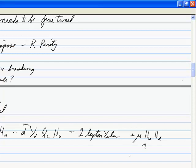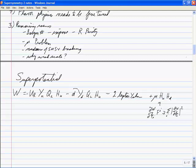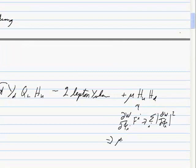When I take the superpotential and take dW/dφ times F, then integrate out F using the sum over i of |dW/dφᵢ|², the μ term gives: taking the derivative with respect to H_D I get μ²H_D², and with respect to H_U I get μ²H_U². So the mu term turns into mass terms for the Higgs: μ²(|H_U|² + |H_D|²).